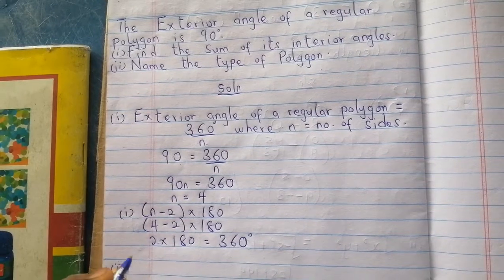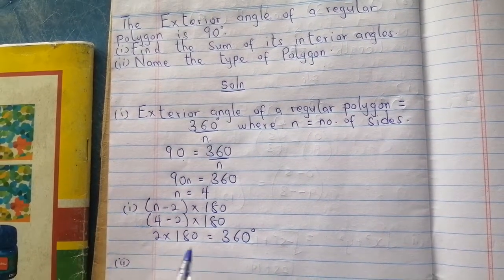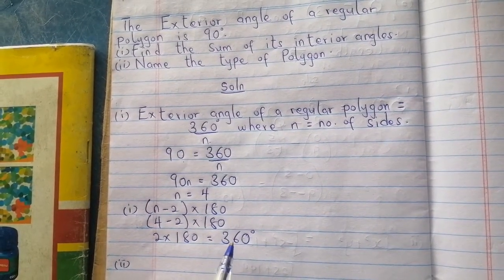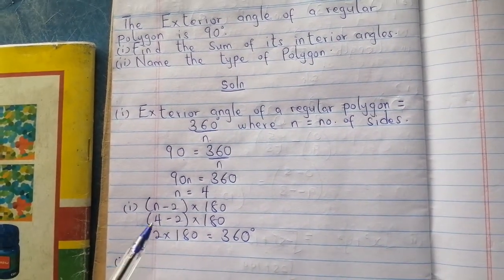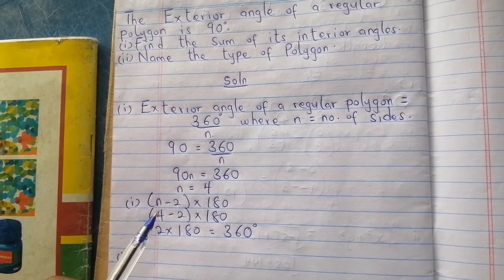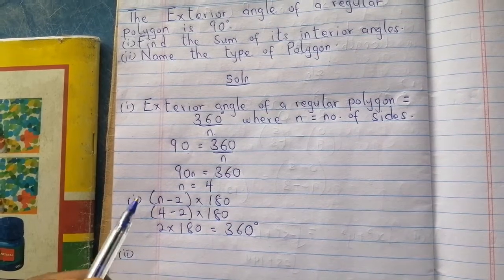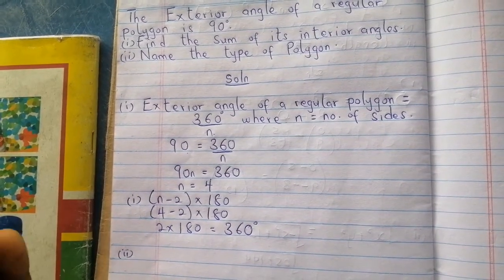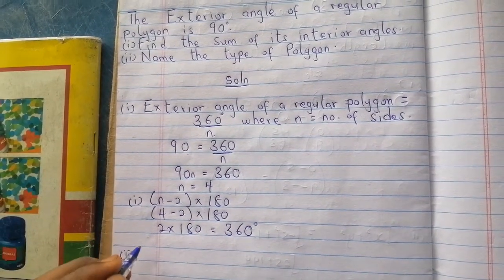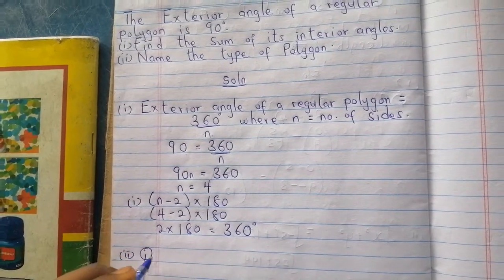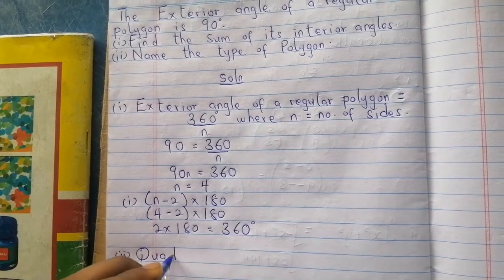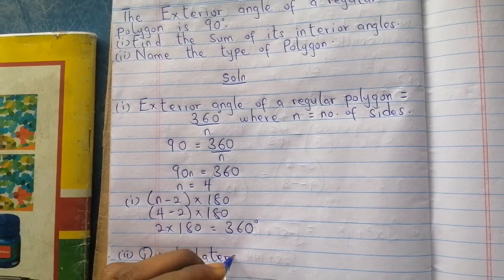Part two is saying that, name the type of polygon. Because it's 360, meaning each of the interior angles is 90 degrees. So the sum of the interior angles of a four-sided figure is equal to 360. So this is a quadrilateral.